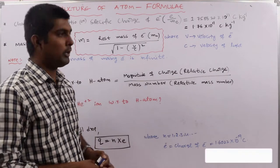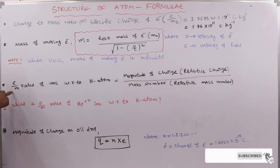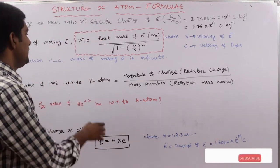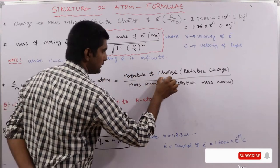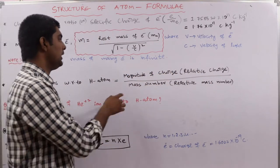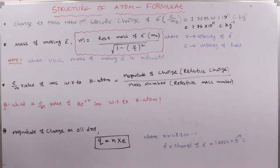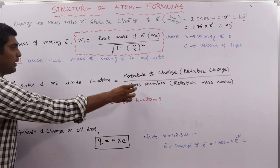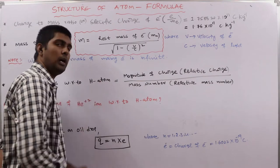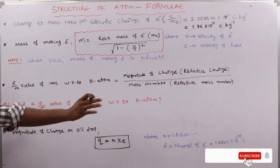The e/m value of ions with respect to the hydrogen atom equals the magnitude of charge divided by the mass number — that is, the relative charge by relative mass number. Using this formula we can calculate the charge-to-mass ratio of any ion with respect to the hydrogen atom.